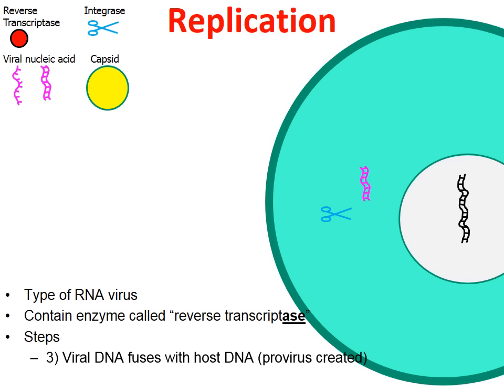Moving to the next step, the DNA of the virus that was just created will actually enter into the nucleus along with the enzyme called integrase. Integrase is drawn to look like a pair of scissors, symbolic of what it performs — integrase will actually cut open the DNA of the host cell. It's called integrase because it helps to integrate the DNA of the virus into the DNA of the host cell.